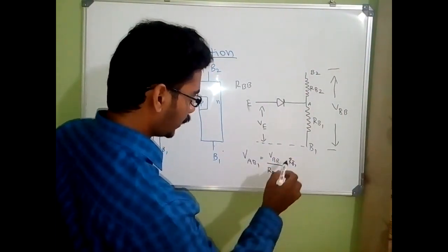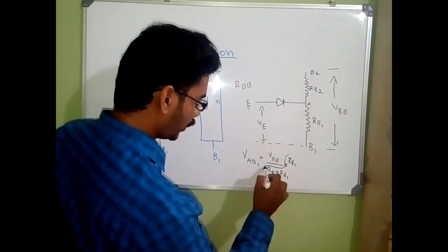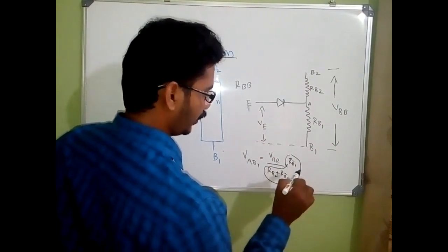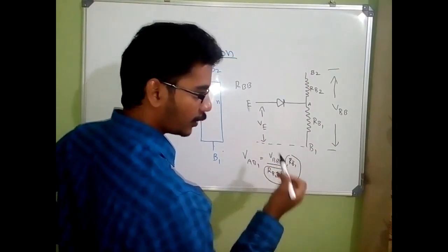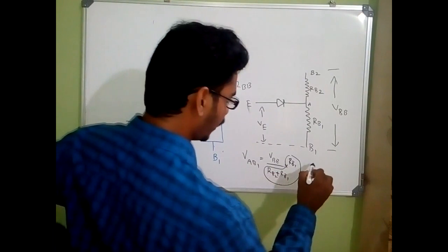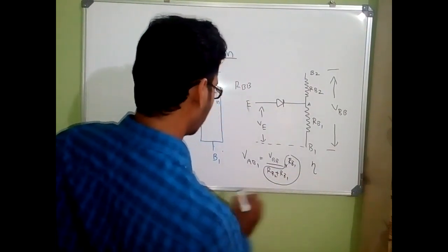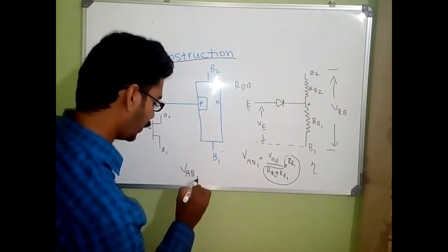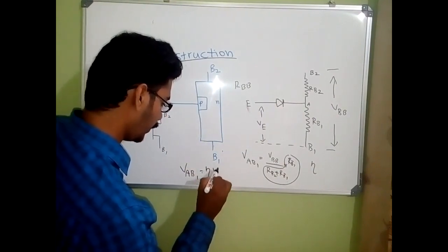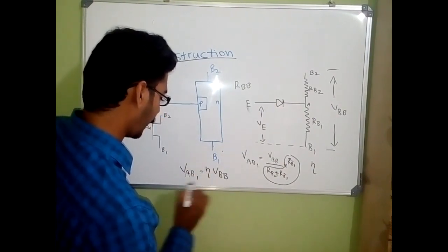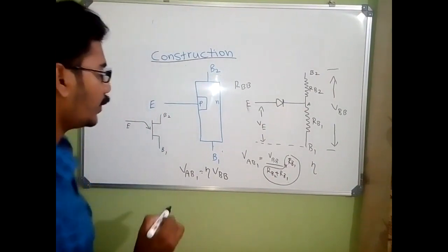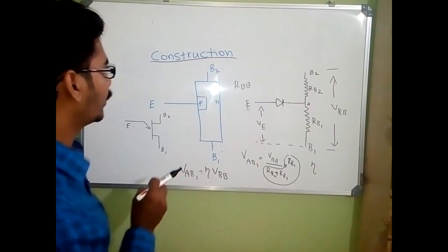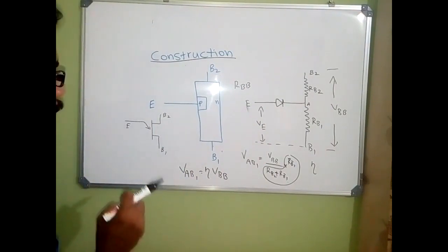We call the ratio RB1 divided by (RB2 plus RB1) the intrinsic standoff ratio, represented by the letter eta. So VAB1 can be written as eta times VBB. This covers the construction and equivalent circuit of UJT.